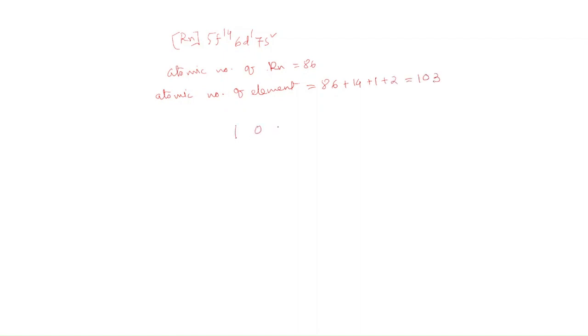Now it is 103. For 1, we will write un. For 0, it is nil. For 3, it is tri. So un plus nil plus tri.